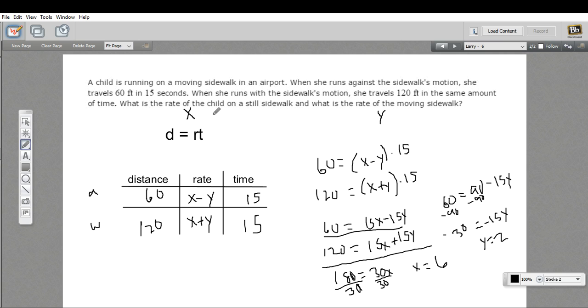So the speed of the child is 6, and this is feet per second. And the speed of the sidewalk is 2 feet per second. So that's a little work with these tricky distance, rate, and time problems. Hope that helps.